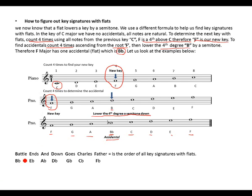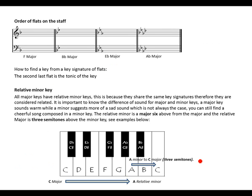The order of flats is: Battle Ends And Goes Down Child's Father — B flat, E flat, A flat, D flat, G flat, C flat, F flat. That is the order of all flat keys or keys with flat key signatures.